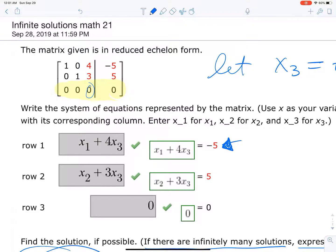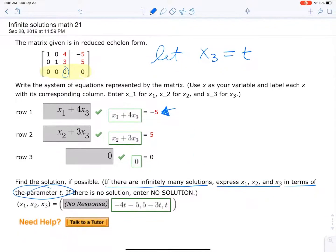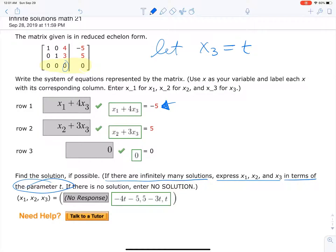And then the second equation you get x2 plus 3x3 equals 5. Now from those we can go ahead and get the infinite solutions, so let's do that.